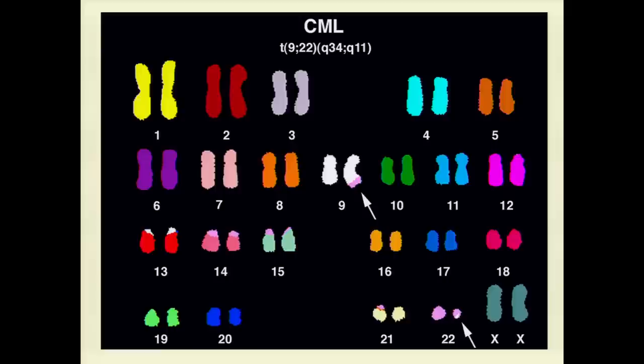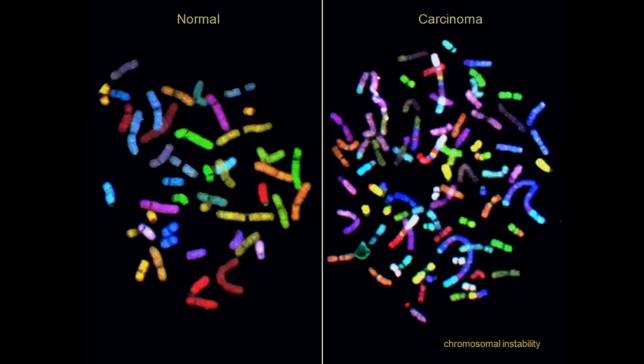If you look at solid tumors — carcinomas in particular, tumors of epithelial origin — the picture changes dramatically. Here is a normal karyotype, and here are metaphases from a breast cancer cell line, SKBR3. You can see a profound degree of chromosomal instability, not only numerically but also structurally. You can see giant marker chromosomes, which are a reflection of oncogene amplification — in this case, the CMYC and the HER2/neu oncogene.